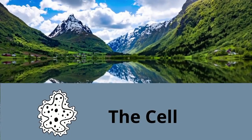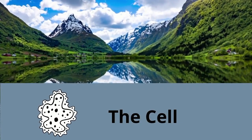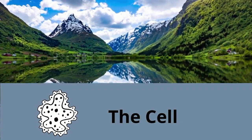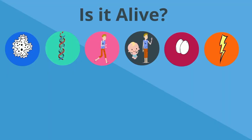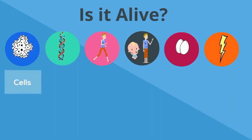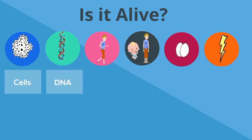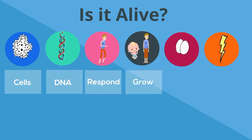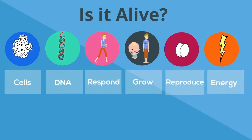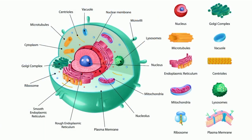In other words, the cell is considered the smallest thing that is alive. In order for something to be alive, it needs to have these six characteristics: it needs to be made of cells, contain DNA, respond to stimuli, grow and develop, reproduce, and require energy. The organelles of a cell work together to keep the cell alive.